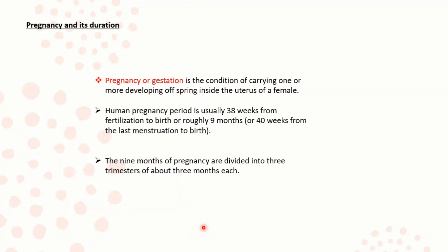Pregnancy and its duration. The pregnancy or gestation is the condition of carrying one or more developing offspring inside the uterus of a female. Human pregnancy is usually 38 weeks from fertilization to birth — roughly 9 months, or 40 weeks from the last menstruation to birth. The 9 months of pregnancy are divided into 3 trimesters of about 3 months each.